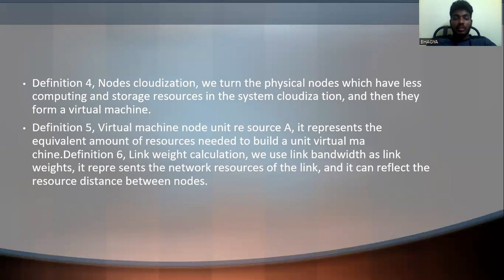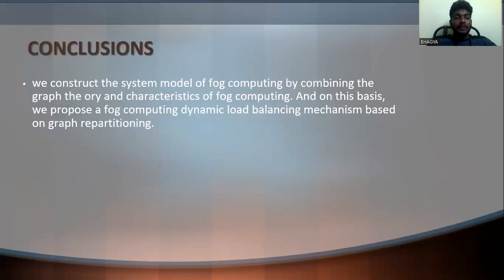When discussing the graph model, we take edges between two nodes and talk about the weights — this is the link weight calculation. We use link bandwidth as the link weight; it represents the network resource of the link and reflects the resource distance between nodes. In conclusion, we can model fog computing systems by combining graph theory and the characteristics of fog computing. On this basis, we propose a fog computing dynamic load balancing mechanism based on graph repartitioning.